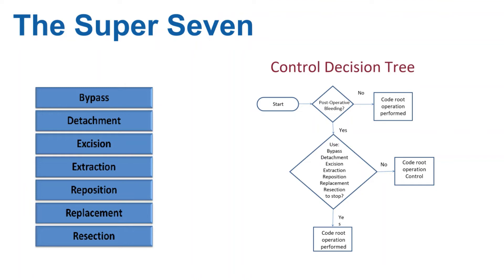Irrigation and evacuation of hematomas done at the operative site should not be coded separately. Both irrigation and evacuation may be necessary to clear the operative field and then effectively stop the bleeding — without cleaning, you cannot control the bleeding. So evacuation and irrigation of hematomas is included in the root operation Control.